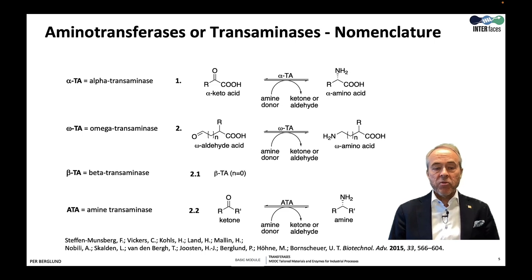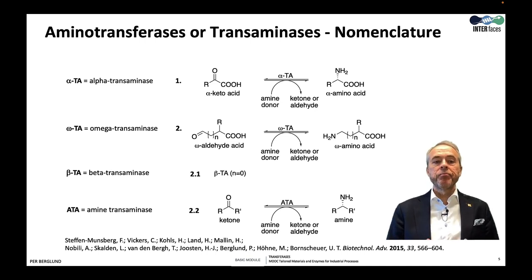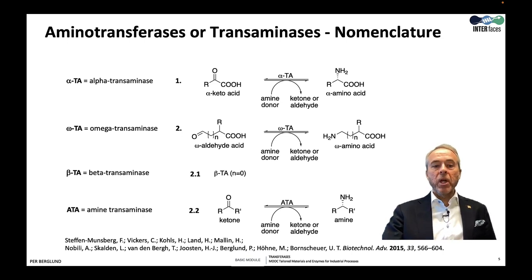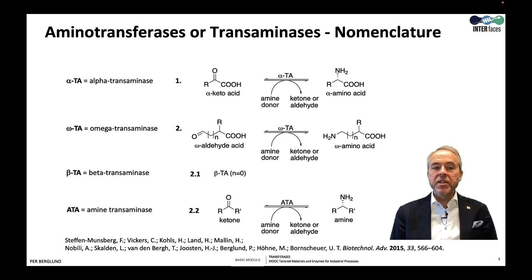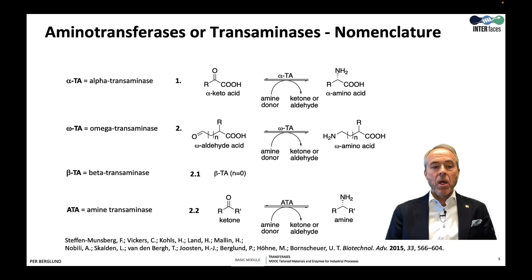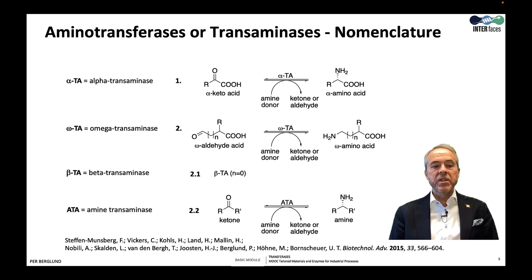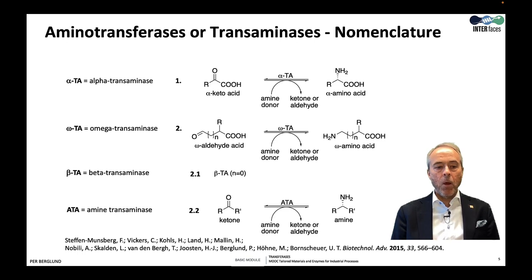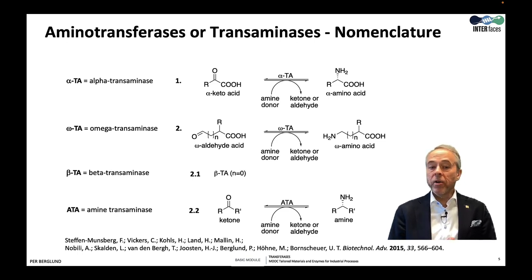Now to the example of the PLP enzymes — transaminases. These enzymes catalyze the transfer of an amino group from a donor to an acceptor. An amino group can be transferred to an alpha carbon, a beta carbon, or an omega carbon. Therefore we speak about alpha transaminases catalyzing the formation of an alpha amino acid. If the amino group is transferred to a carbon more distant from the carboxyl group, then it would be a beta transaminase — if the amino group ends up on the carbon next to the alpha carbon — or an omega transaminase if it is even more distant.